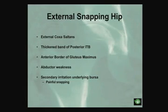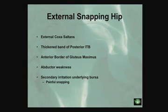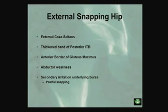Reasons for external snapping include not just overall IT band thickening but often a more focal thickening of the posterior portion. Sometimes it's snapping of the gluteus maximus tendon; abductor weakness can also present as snapping. In post-op cam patients, the most common problem I see is a very tight IT band secondarily — around three or four months post-op they come in with tight IT band because their hip rotation has improved but the IT band is still tight.